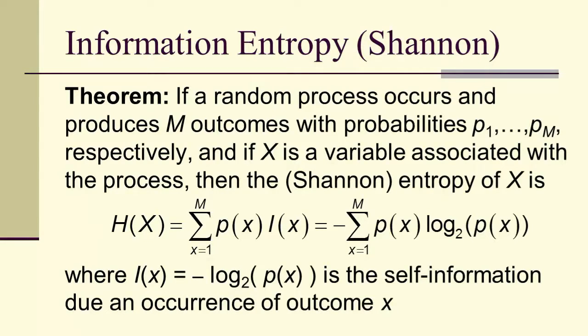...we have the following theorem. If a random process occurs and produces M outcomes with the associated probabilities p_1 to p_M, and if X is a variable associated with the process, then the Shannon entropy of capital X is the average...